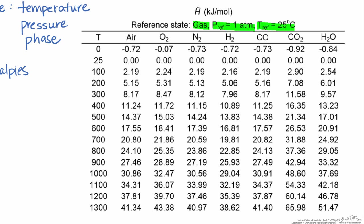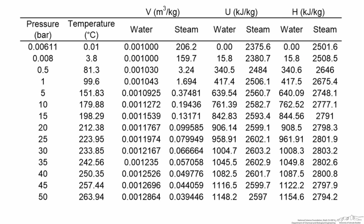For example, if you stated that the reference was 25 degrees C, one atmosphere, and N2 in its gaseous form, N2 gas, and you wanted to know what the enthalpy was at 600 degrees, all you would have to do is look it up right there, and you'd find that your enthalpy is 17.39 kilojoules per mole. Notice by the way, if you look at 25 degrees C, all the enthalpies for all the different gases are zero.